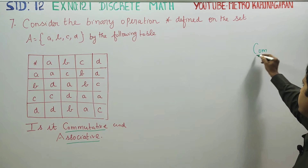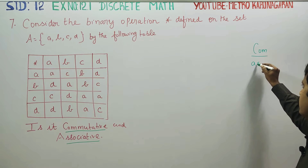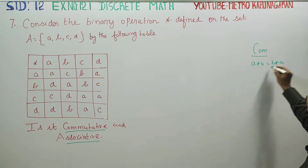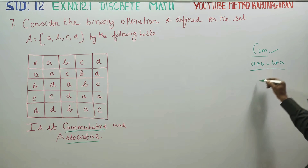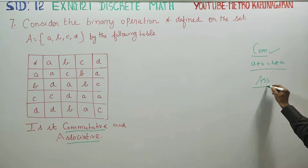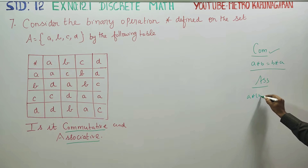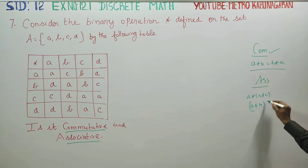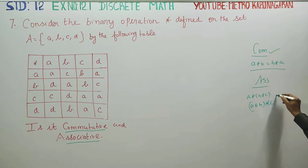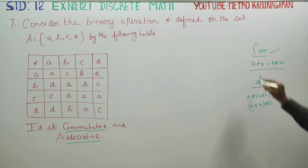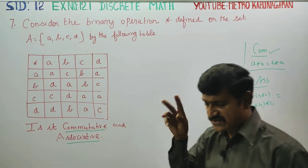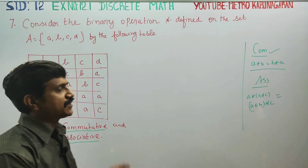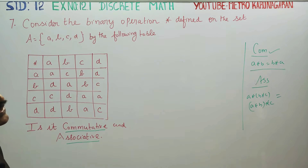For commutative, we check if a★b equals b★a. For associative, we check if a★(b★c) equals (a★b)★c. If a★b equals b★a, the operation is commutative. If a★(b★c) equals (a★b)★c, the operation is associative.